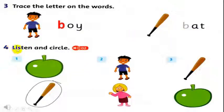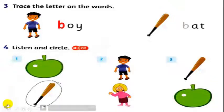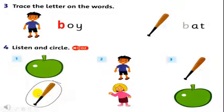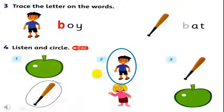Number 4: listen and circle. You use a pencil to circle. Example — are you ready? Now listen together. Listening — listen and circle. One: bat — example. Two: boy. Three: bat. Good job!